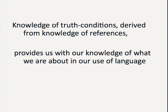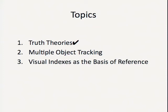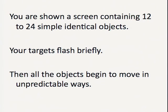OK. So Pylyshyn, back in the late 90s, did a suite of experiments — a whole set of experiments that continue to this day — on what he calls multiple object tracking. What goes on in multiple object tracking is quite easy to state. You're shown a screen containing between 12 and 20 simple, identical objects. Some of them flash, and you're told the ones that flash are yours — keep tabs on them. And then they all start to move around in unpredictable ways.